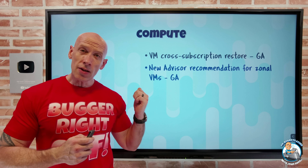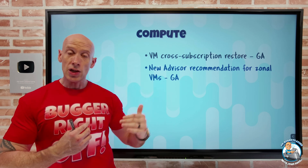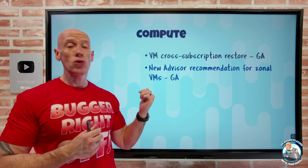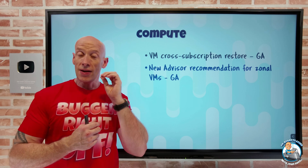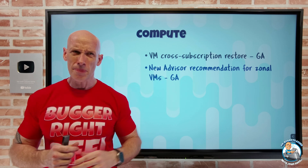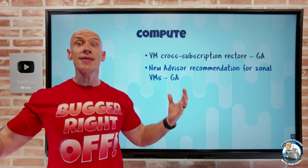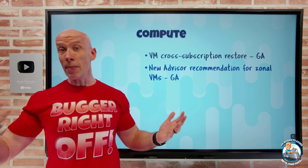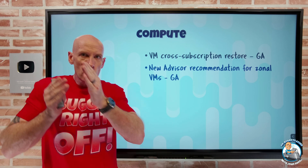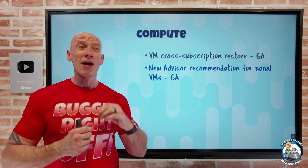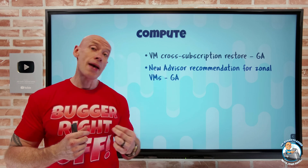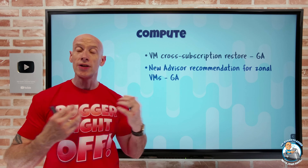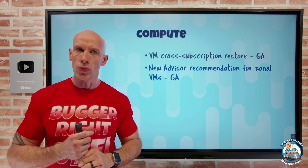There's a new Azure Advisor recommendation to use zonal virtual machines — where a VM is placed in a specific availability zone. This is only useful if you have more than one instance; just putting a single VM in a zone doesn't buy you much. But if you have multiple instances, make sure you distribute them over multiple zones. Ideally you're using a VM scale set, which can be made zone-redundant and will automatically distribute VMs across zones.